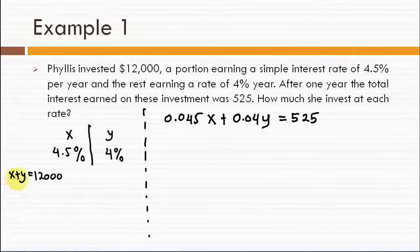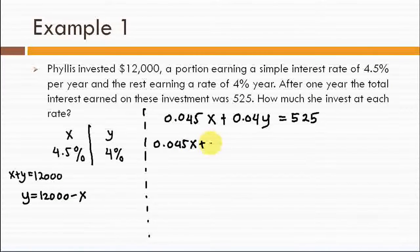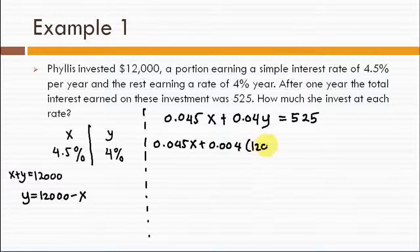Since the sum of x and y is 12,000 then we can for example solve for y to get y equals 12,000 minus x.